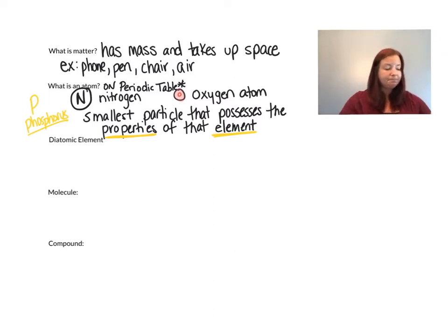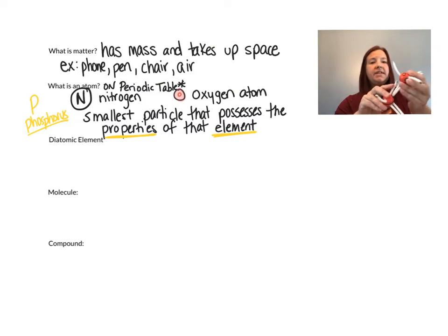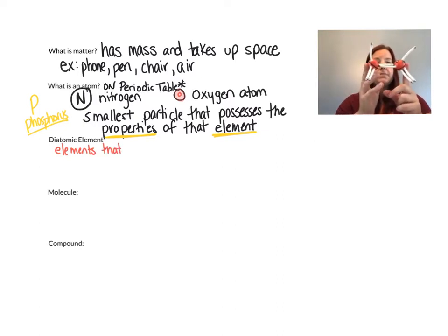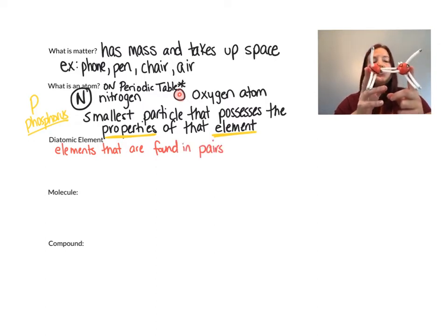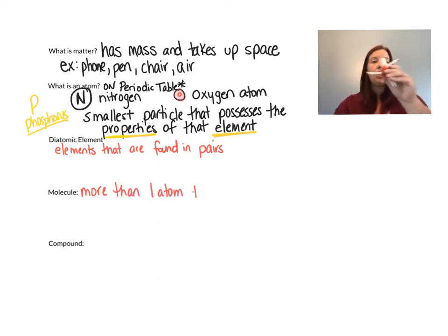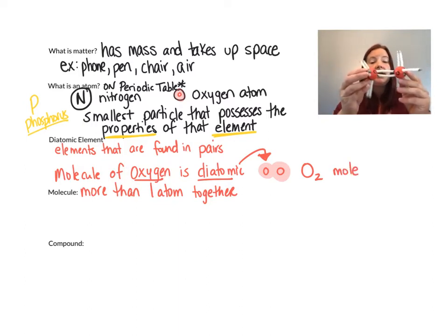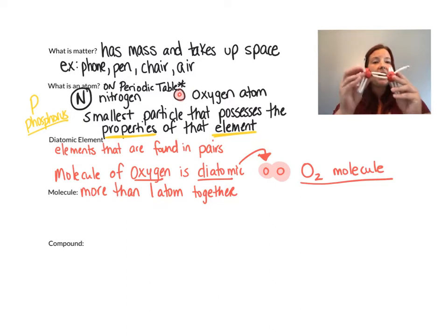Some atoms don't like to float around as single atoms. Some prefer to be what is called diatomic, meaning two of the atoms connect to each other. When we have more than one atom together, I'm going to call this a molecule. So this is an atom, and this is a molecule of oxygen. This is the way that oxygen floats around naturally — as O2, not as individual oxygen atoms. They float around as oxygen molecules.